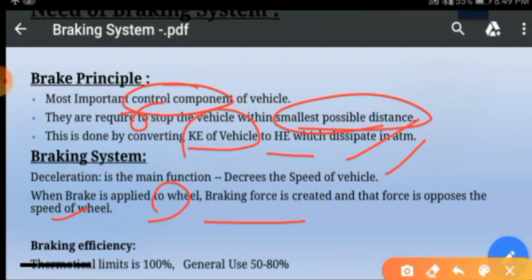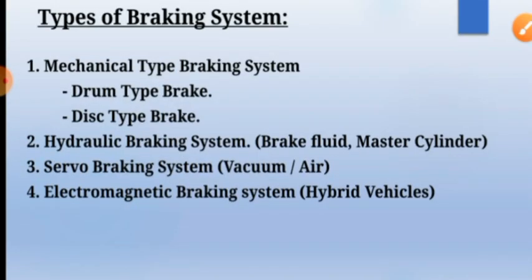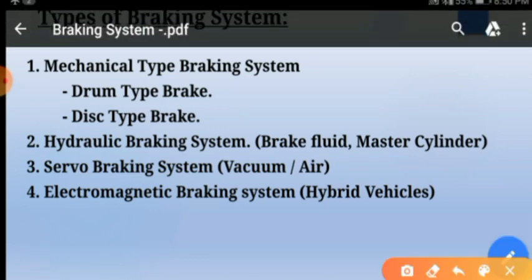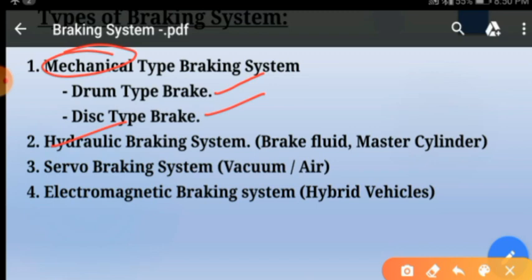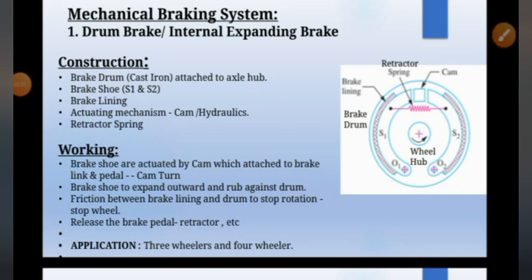There are four major types of braking system. First is the mechanical type braking system — in mechanical type we have drum and disc type brakes. In mechanical braking system we use cam, piston, and cylinder to apply the braking force. In hydraulic braking system we use brake fluid, master cylinder, etc. In servo braking system, with the help of vacuum or air we decrease the speed of the vehicle. The last one is electromagnetic braking system, which is generally used in hybrid vehicles.